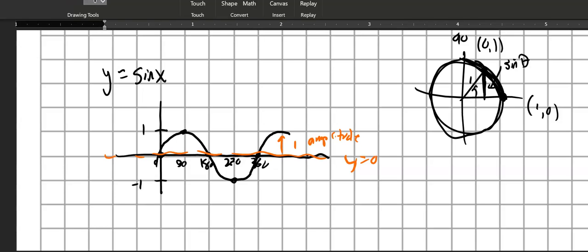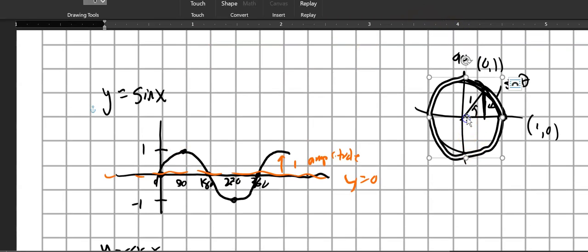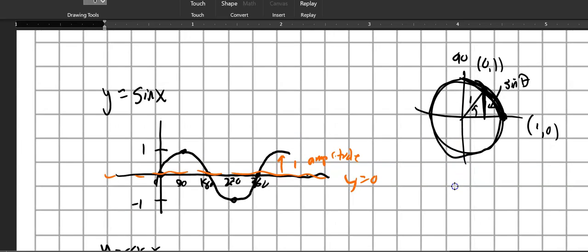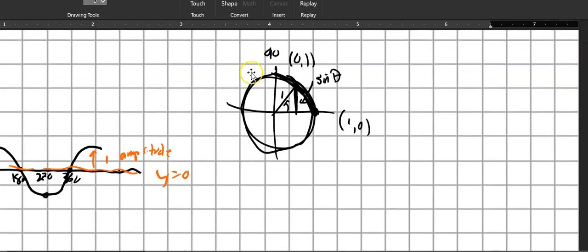Now, similarly, I could graph cosine. So let's do that. I'm going to use those same 90, 180, 270. And if I think about that unit circle with cosine, cosine is about width. So as I'm going around the circle, this is my cosine value.